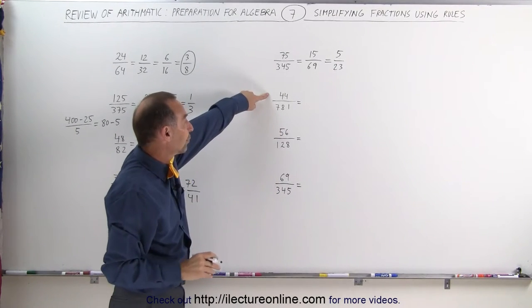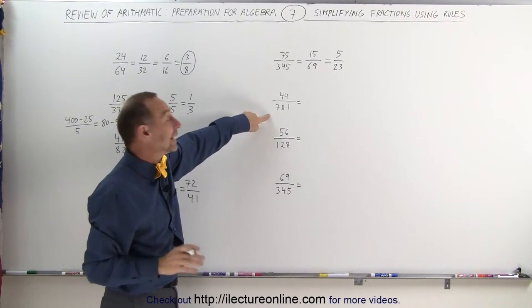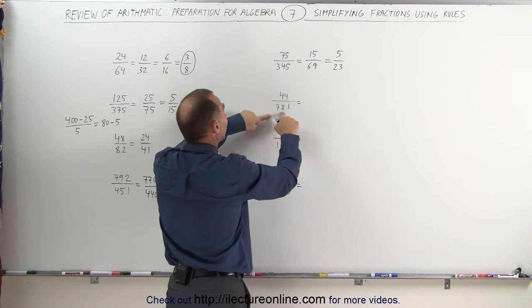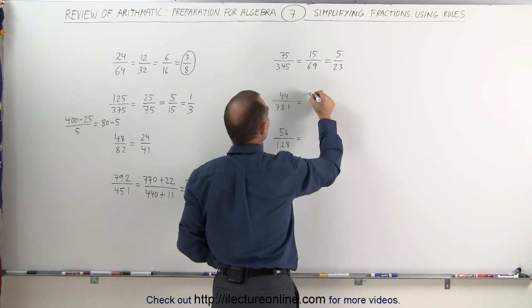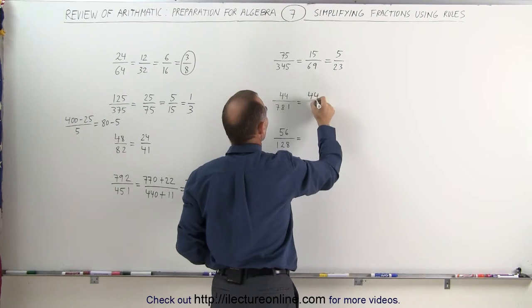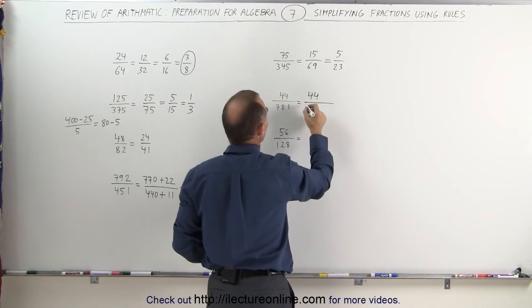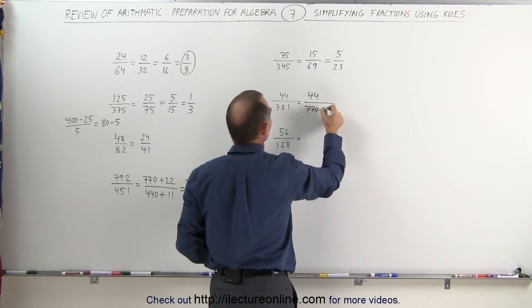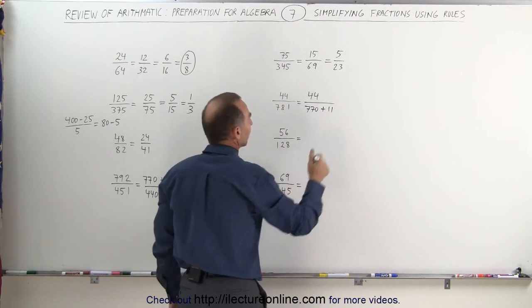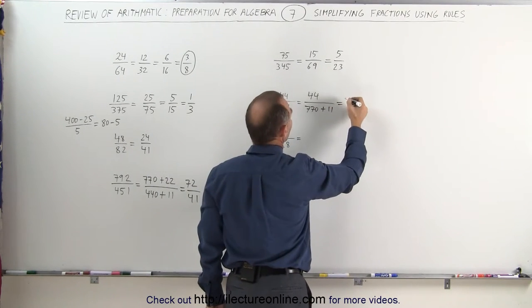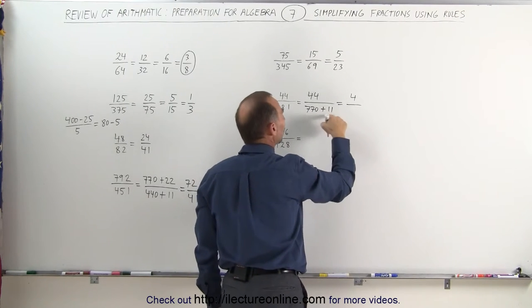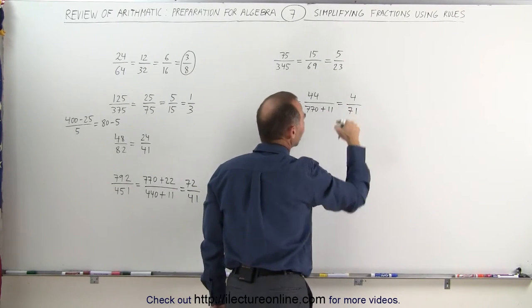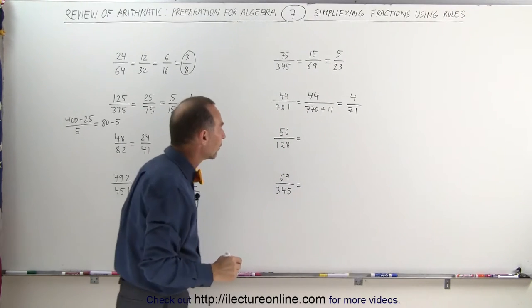Here, notice that 44 can be divided by 11, and so can 781. 7 plus 1 adds up to 8. So 44 divided by 11, that is equal to... well, let me wait a moment. I'm going to write as 44 divided by, this I can write as 770 plus 11. Then I can see that 44 divided by 11 is equal to 4. 770 divided by 11 is 70, plus 1, 71, and that's a prime number, that's as low as I can go there.